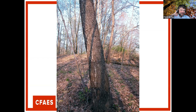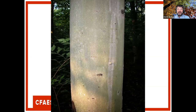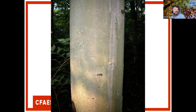Black cherry bark is described as looking like burnt cornflakes or burnt potato chips — small rounded plates stuck to the tree. American beech has very smooth gray bark; red maple on young trees can look similar. Beech doesn't retain as many bark layers due to its cork cambium process. About 90% of American beech of any size will have carvings in it.